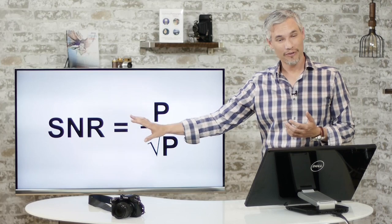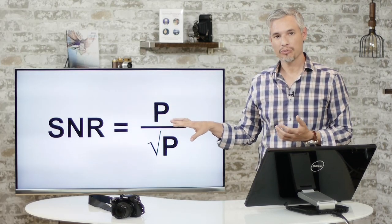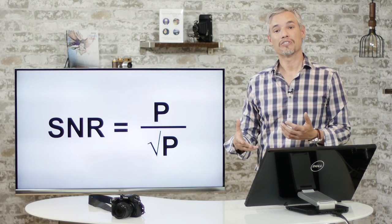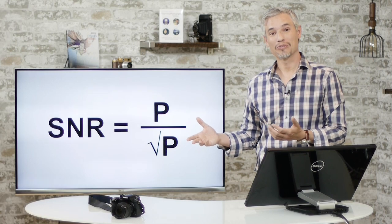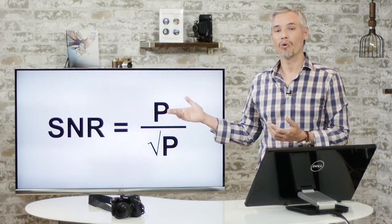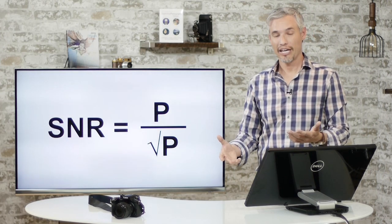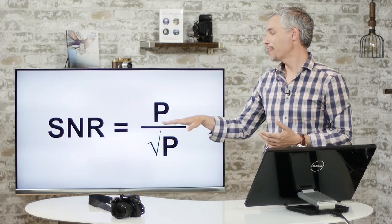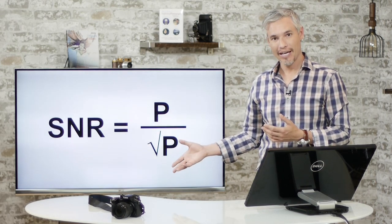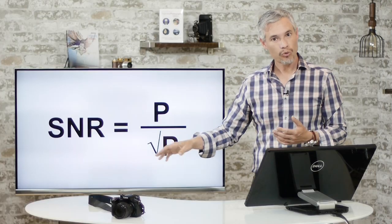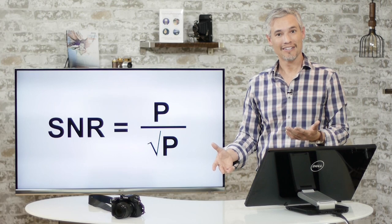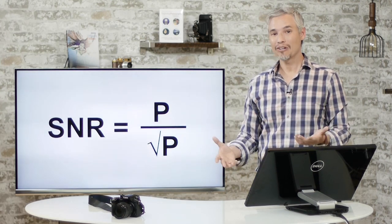Here's the mathematical formula for signal-to-noise ratio, using p to represent photons: SNR = p / √p. If p equals 1, you get 1 divided by √1 = 1 — a signal-to-noise ratio of 1, meaning as much noise as signal, an exceptionally noisy image. If p equals 100, you get 100 divided by √100 = 100/10 = 10, a signal-to-noise ratio of 10. So increasing photons decreases the noise significantly. The more light we get, the cleaner our images will be.